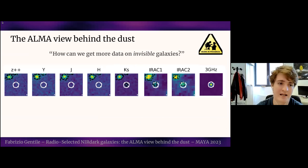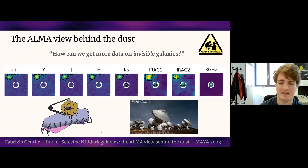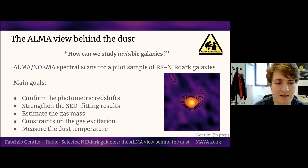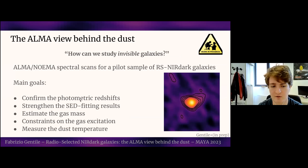This is why I am invoking ALMA. Getting data on invisible galaxies is super complicated — I don't have any flux for bands bluer than K-band. On one side, I can rely on JWST, since COSMOS will be covered by the COSMOS-Web collaboration with mid-infrared data much deeper than ULTRAVISTA and IRAC. But crucially, I can rely on ALMA. With my group, we started a series of programs with ALMA and NOEMA, asking for spectral scans for a pilot sample of currently about 11 galaxies. The main goal is to confirm the photometric redshifts of our sources, strengthen the SED fitting results, and use millimeter observations to estimate the gas mass and measure the gas temperature.